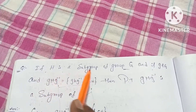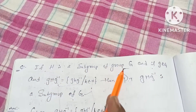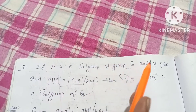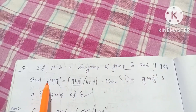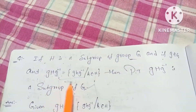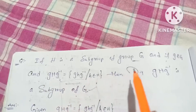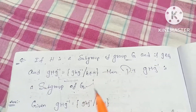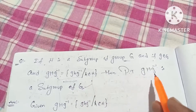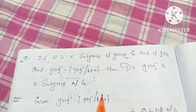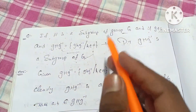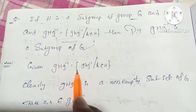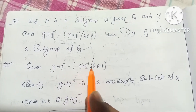If H is a subgroup of group G, and gHg⁻¹ is equal to the set {ghg⁻¹ | h ∈ H}, then prove that gHg⁻¹ is a subgroup of group G. This is a group theory problem. Given that gHg⁻¹ equals gHg⁻¹, we need to establish the proof.